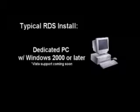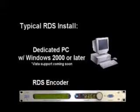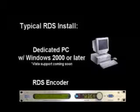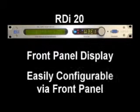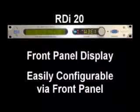Next, you will need an RDS encoder. TRE supports all major RDS encoders that are capable of accepting a serial or UDP connection and outputting dynamic program service and radio text. But of course, the Radio Experience software works best with Broadcast Electronics' own RDI20 RDS generator, which features a full front panel display and is entirely configurable from the control knob on the front panel.